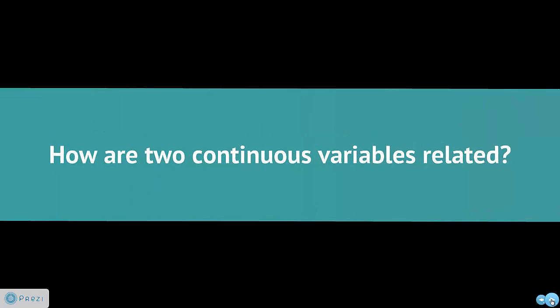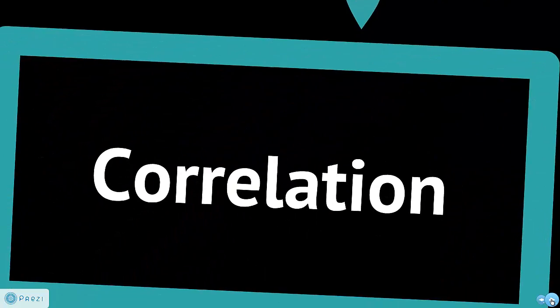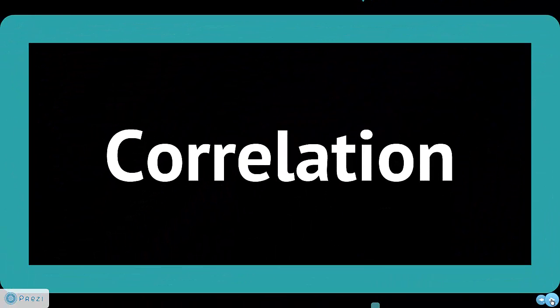So the first question is going to be, how are two continuous variables - think of say, BMI measure and blood pressure - how are those two things related? How can we tell? Well, for that we're going to cover correlation analysis.